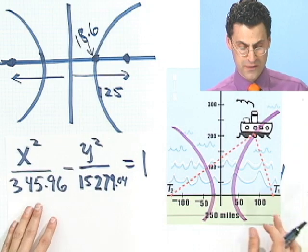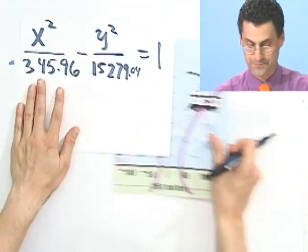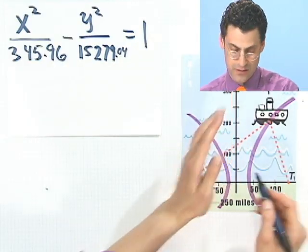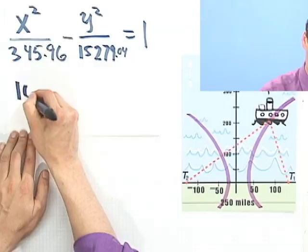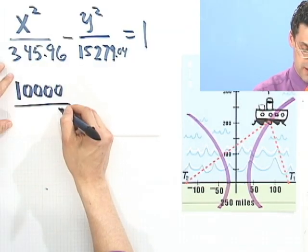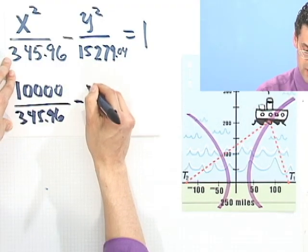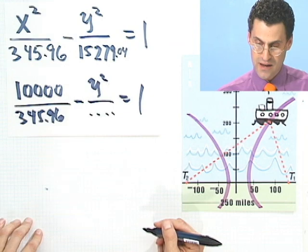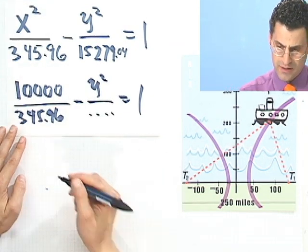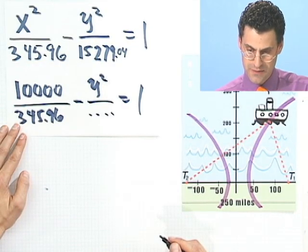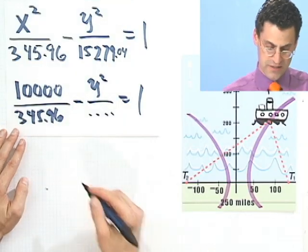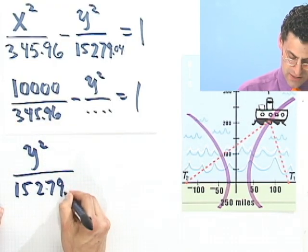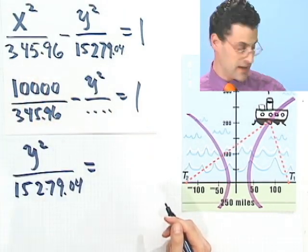All I've got to do is plug in 100 for x. Taking x and squaring it, that's 10,000 divided by 345.96 minus y²/15,279.04 = 1. Now to solve that, I bring all these constants over. y²/15,279.04 equals 1 from that number.